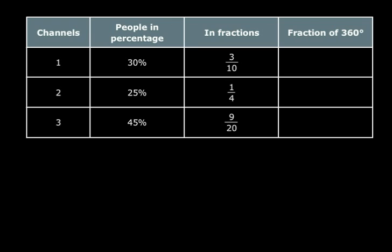Now we need to find the corresponding angle. Total angle was 360 degrees. So 3 tenths of 360 degrees, that is 3 by 10 into 360 which is 108 degrees. For channel 2, it is 1 fourth of 360 degrees which is 90 degrees. And for channel 3, process remains the same. You get 162 degrees.